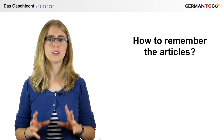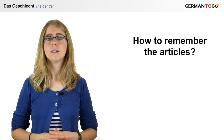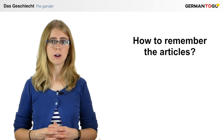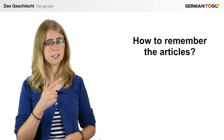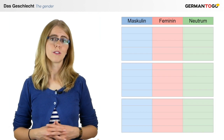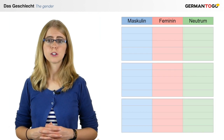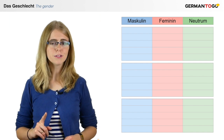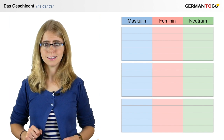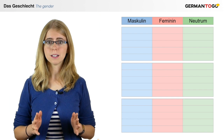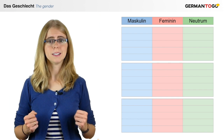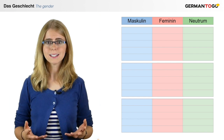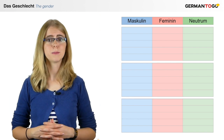After a while, you won't need to do that anymore. For example, you can write down every new noun that you learn in a table. So, for the visual learners, you might remember: I wrote that word down on the left, so it's masculine; I wrote that word down in the middle, so it's feminine; and I wrote that word down on the right, so it has to be neuter.